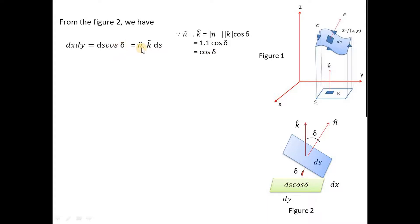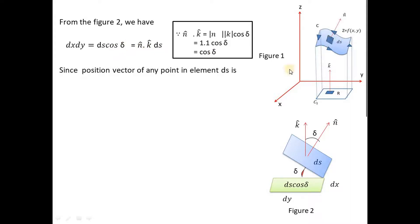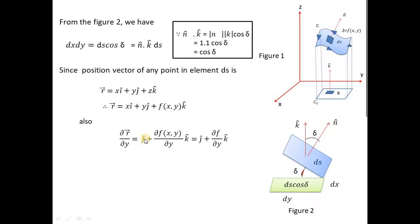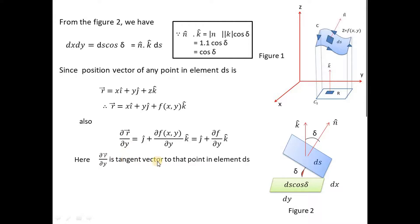Since the position vector of any point within element DS is r = x î + y ĵ + z k̂, and the surface equation is z = f(x, y), we substitute to get r = x î + y ĵ + f(x, y) k̂. Taking the partial derivative with respect to y, the first term vanishes, the second gives ĵ, and the third gives (∂f/∂y) k̂. So ∂r/∂y = ĵ + (∂f/∂y) k̂, which is the tangent vector at that point.